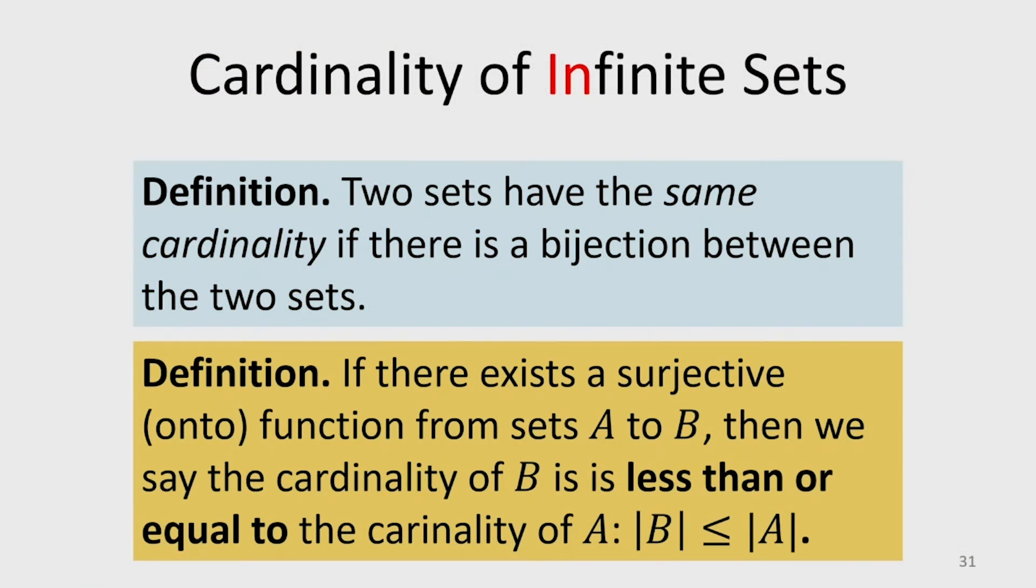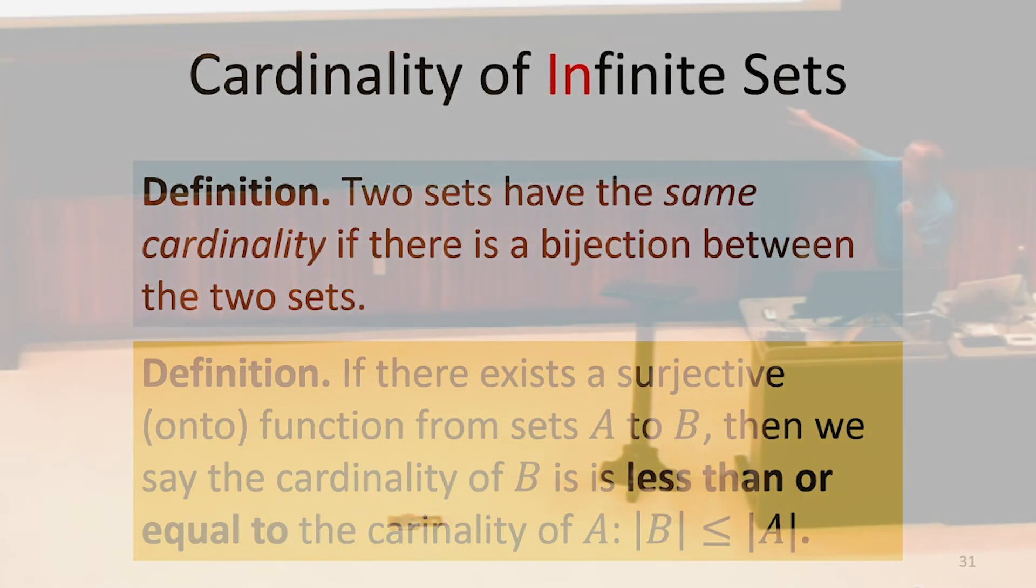If we define equality, we can also define less than or equal to. If there's a mapping that is surjective from A to B, well, that means that the size of A is at least the size of B. I said it in the opposite direction here. This is intuitive, right? From our equality definition, if there's a one-to-one mapping, if there's a direction where there's a mapping at least in one direction, we know one set is not bigger than the other set.